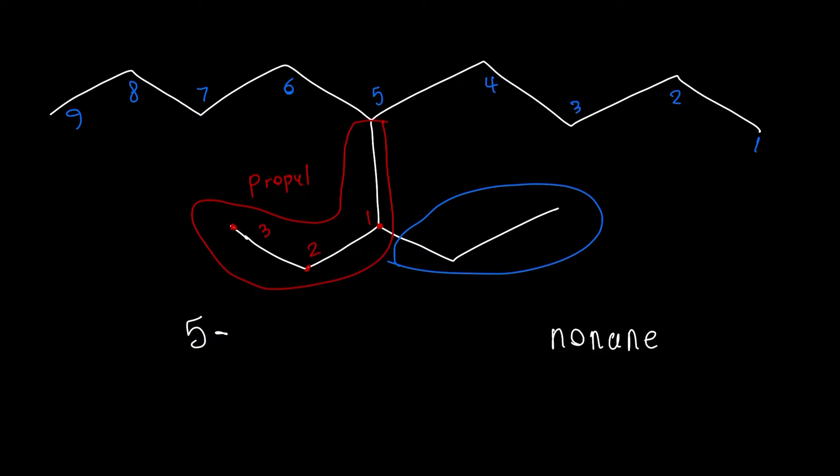And then off the propyl, we're going to have 1, 2, and that's going to be an ethyl.